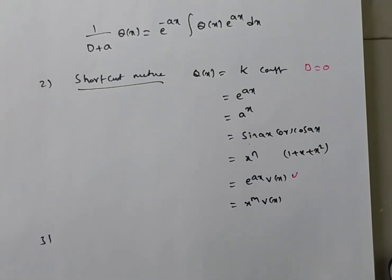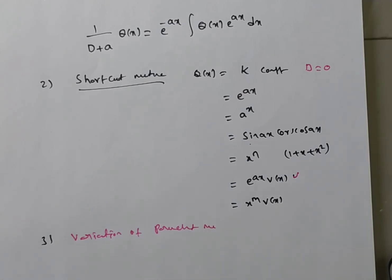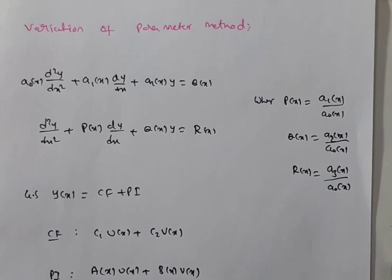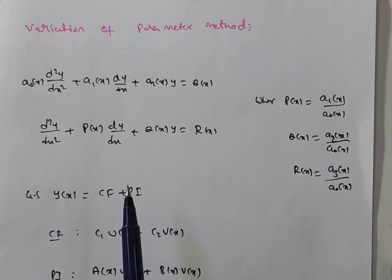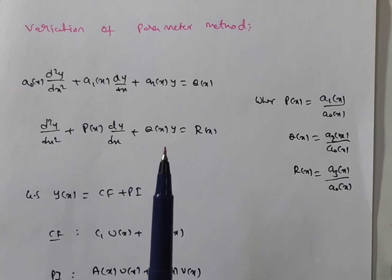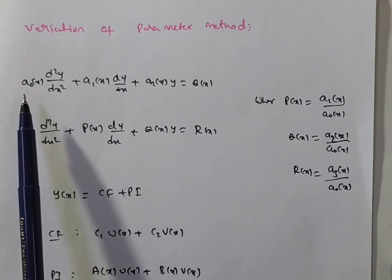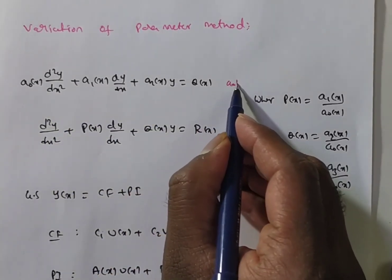A special method is the variation of parameters, applicable to both first-order and higher-order DEs. For a second-order linear DE — dividing by a₀(x) to get y'' + P(x)y' + Q(x)y = R(x) — we use this standard form, where P(x) = a₁/a₀, Q(x) = a₂/a₀, and R(x) = a₃/a₀.